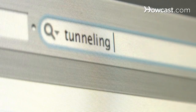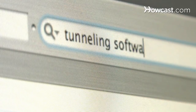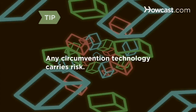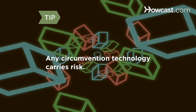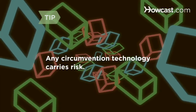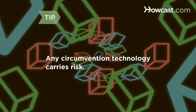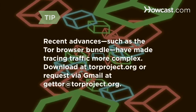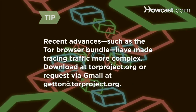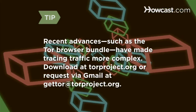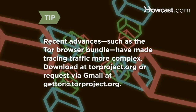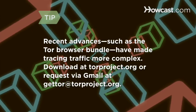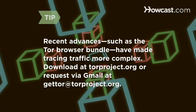Search online for tunneling software or anonymizing software for options. The use of any circumvention technology carries some risk. No method guarantees complete anonymity, and evidence of downloaded software could land you in trouble in certain countries. Recent advances have made tracing Internet traffic more complex, however. One example is the Tor Browser Bundle, which leaves virtually no trace on a computer and anonymizes your Internet use.